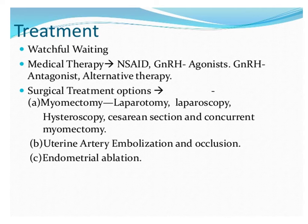Surgical treatment options include myomectomy by laparotomy or laparoscopy — if the patient is young, desires more children, and does not want uterus removal, we go for myomectomy. Hysteroscopy can be used if the fibroid is located in the endometrial cavity. If myomectomy risks adhesion formation, uterine artery embolization is another technique — embolization of the uterine artery blocks blood supply to the fibroid, resulting in its shrinkage.